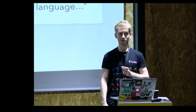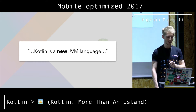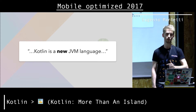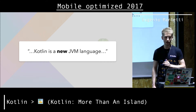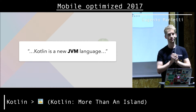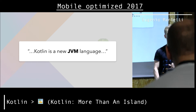First, that it's new. It's not. It was first announced in 2011, which is six years ago. As a comparison, Android was released nine years ago, so not that far. The 1.0 hit in 2016, which is last year. We already have 1.1, and 1.2 is being developed, so they're moving really fast. The second thing is that it's called a JVM language — it is also a JVM language, but Kotlin comes in many flavors.